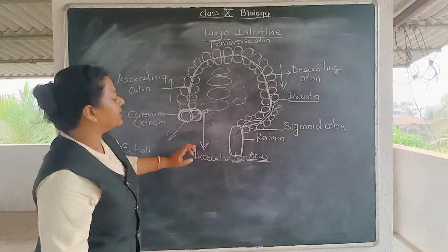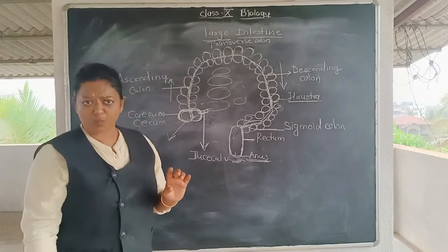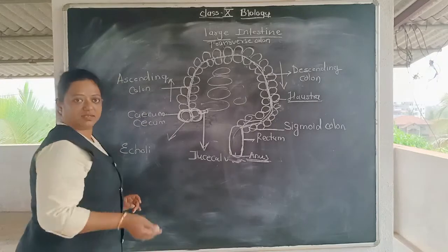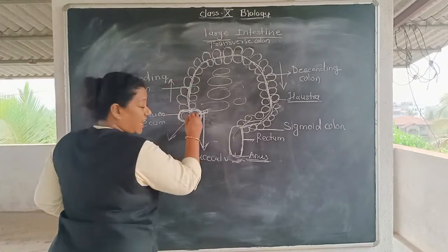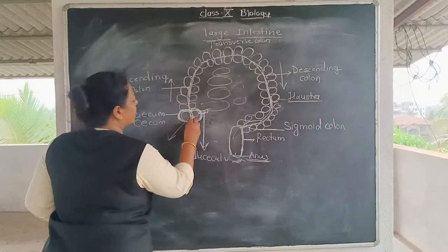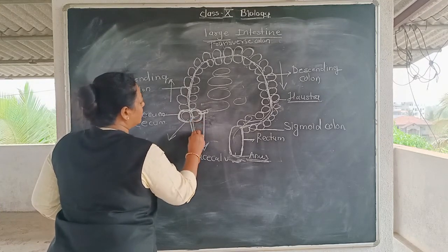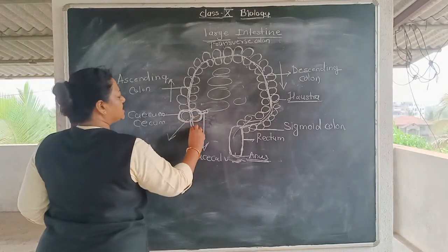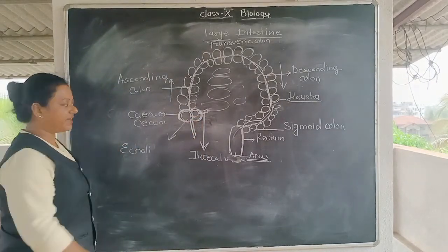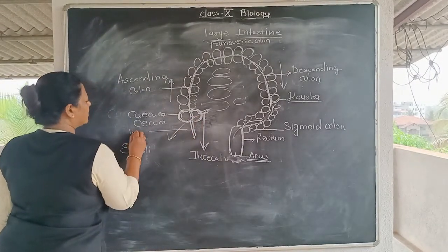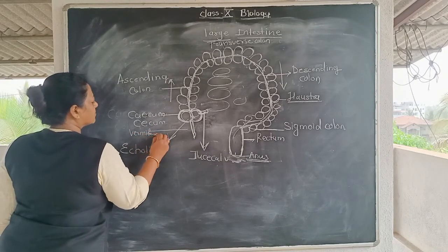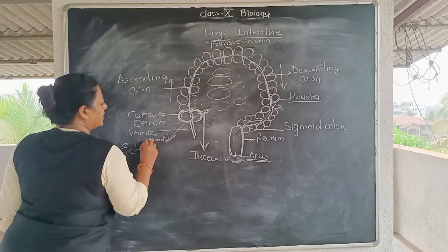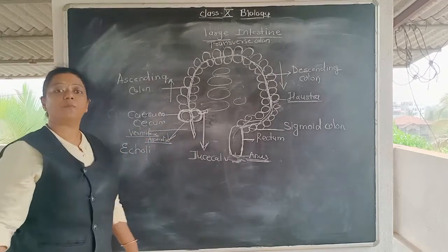Through the sigmoid colon, rectum, and anus, the body gets rid of these particles. One important point: here we have the vermiform appendix — a structure that looks like a worm, so it is called the vermiform appendix.